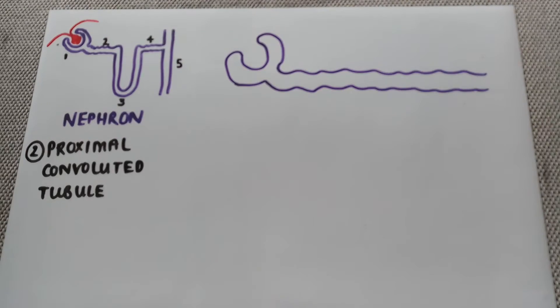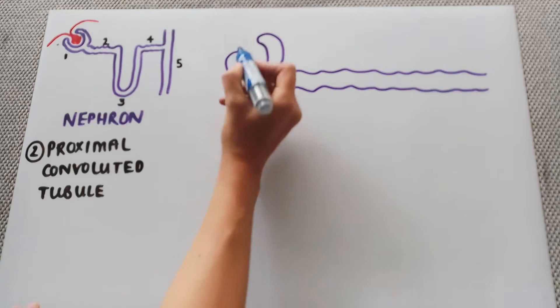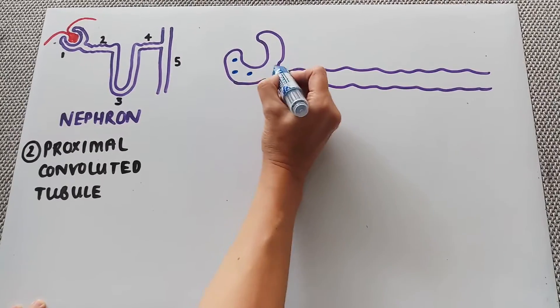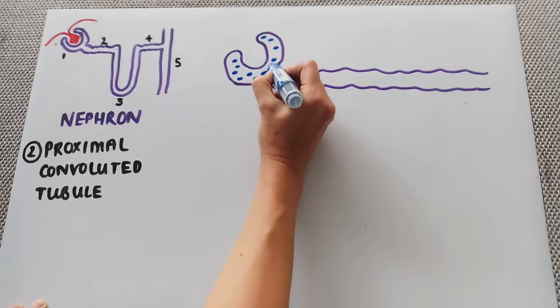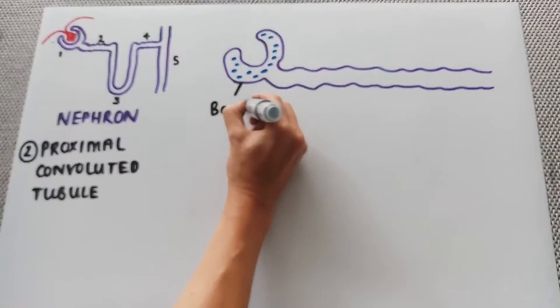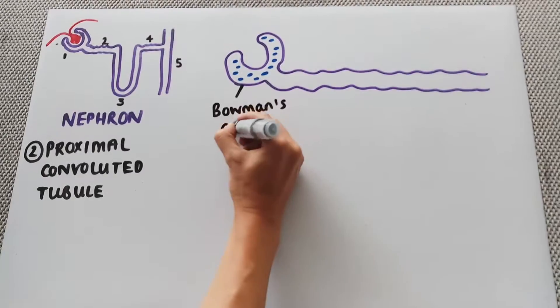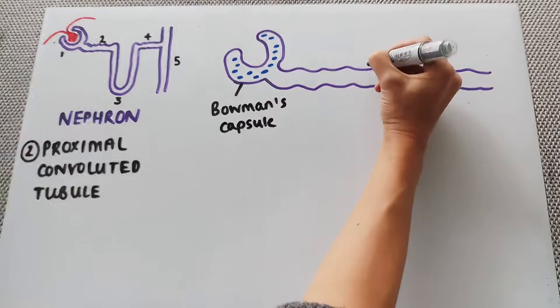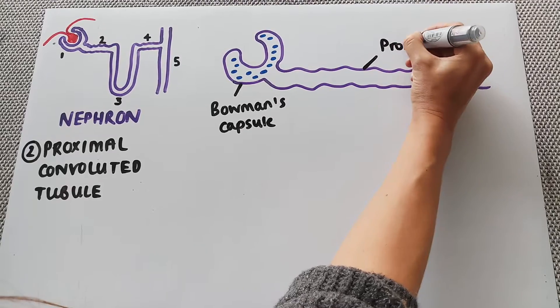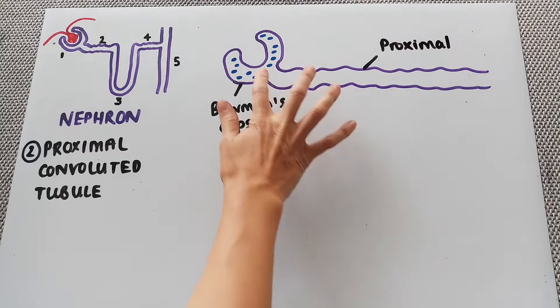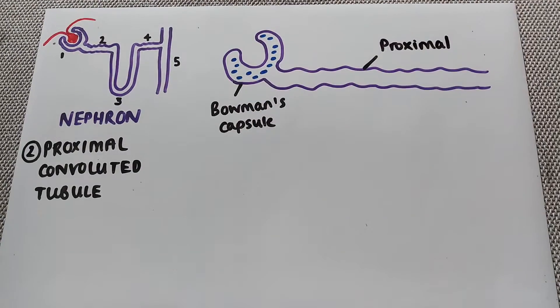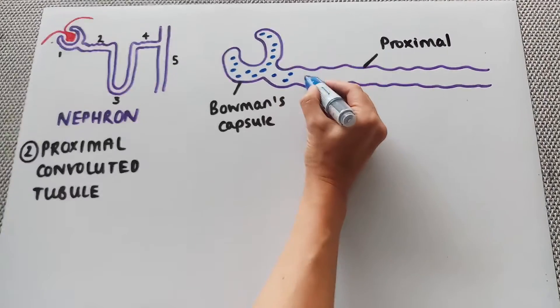So previously, at the end of the last video, what we had was inside of the Bowman's capsule, we had the glomerular filtrate, which had been pushed out of the glomerulus by ultrafiltration into the Bowman's capsule. So the first thing that happens is that glomerular filtrate moves into the proximal convoluted tubule, moving from the Bowman's capsule into the proximal convoluted tubule.